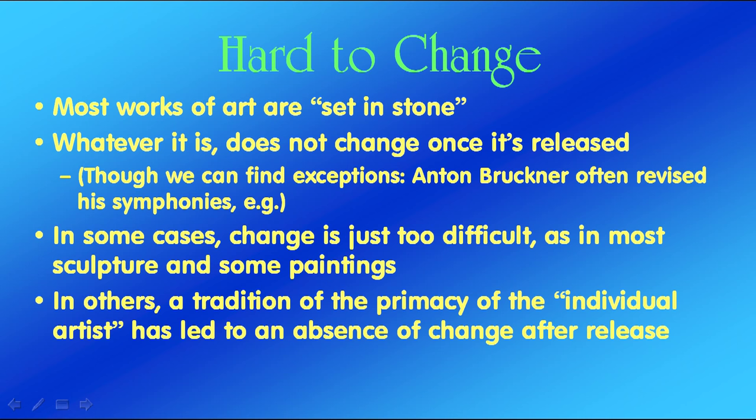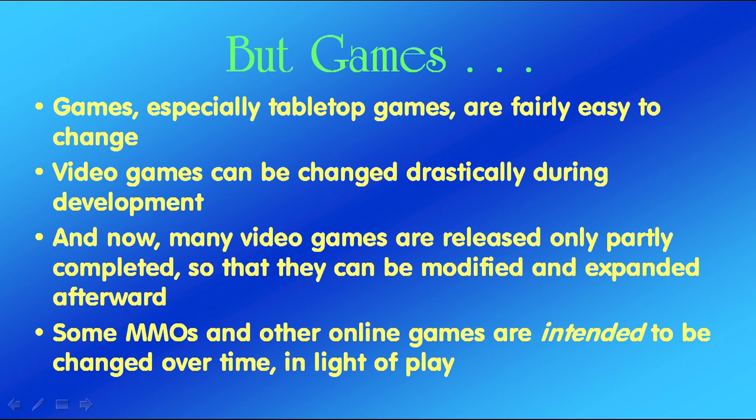Now, the other contrast between games and other works of art is that other works of art are hard to change — they tend to be set in stone. For whatever reason, they don't change once released. We can find exceptions, like Anton Bruckner in the late 19th century, who often revised his symphonies, but that's an exception. In some cases, change is just too difficult, as in most sculpture and paintings. In others, there seems to be a tradition of the primacy of the individual artist, leading to an absence of change after release. But games are fairly easy to change. Tabletop games are quite easy to change. Video games can be changed drastically during development, although it costs more in time and effort. We now have many video games released only partly completed so they can be modified and expanded afterward. Some MMOs and other online games are intended to be changed over time in the light of play — there's no pretense that they won't change.